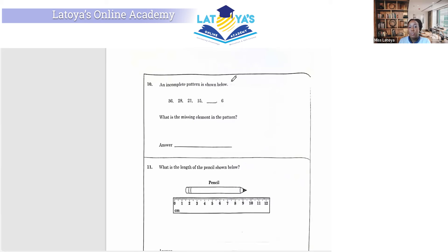Question 10. An incomplete pattern is shown below. We have 36, 28, 21, 15, something, and 6. Well, we can clearly see here that the pattern is decreasing. So we're going to subtract the numbers that are close by to see how much it is decreasing by. So 36 take away 28 is going to give us 8. And then we have 28 take away 21 is going to give us 7. Are you all beginning to see the pattern? So first, 8 was subtracted from 36 to get 28. Now we are subtracting 7 from 28 to get 21. So now we will have to subtract 6 from 21 to get 15. And then we'll have to subtract 5 from 15 to get 10. And then we will subtract 4 from 10 to get 6. So the missing element there is 10.